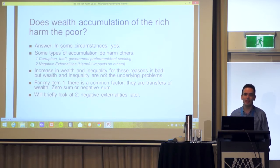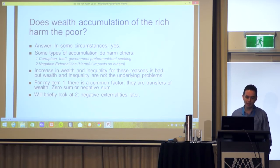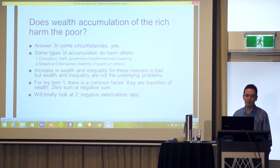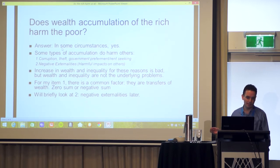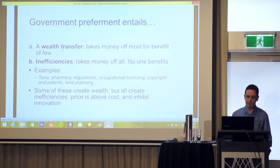But wealth and inequality are not the underlying problems — the underlying problems are those two points. For point number one, corruption, theft, government preferment and rent-seeking, there is a common factor: what we're seeing is a transfer of wealth from one part of society to another. It is zero-sum or even negative-sum. I'm going to focus on government preferment and rent-seeking and will briefly look at negative externalities later.